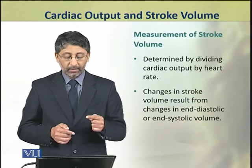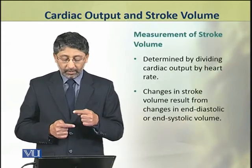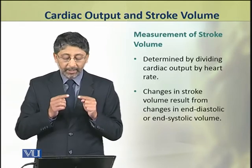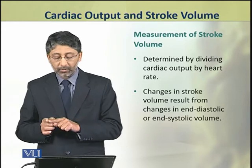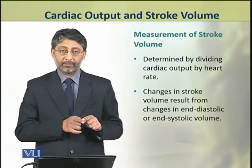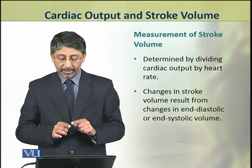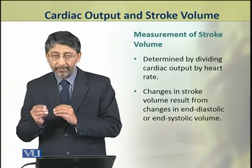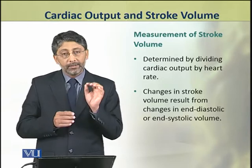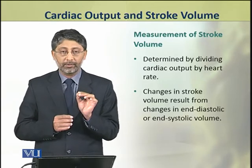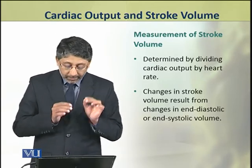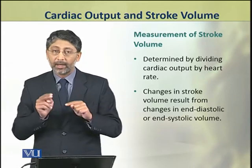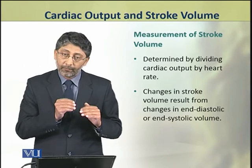The stroke volume is determined by dividing cardiac output by heart rate. Mathematically, we divide the cardiac output by heart rate. Changes in stroke volume result from changes in end diastolic or end systolic volume.